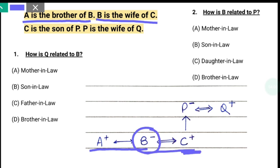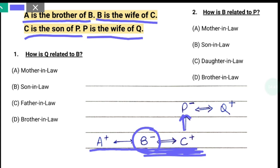C is the husband. C is the son of P. We will write it as a parent-child relationship. Then P is the wife of Q — P's gender is female. Double line represents the husband-wife relationship and Q is the husband. So this is a simple figure of our question.